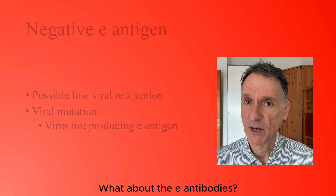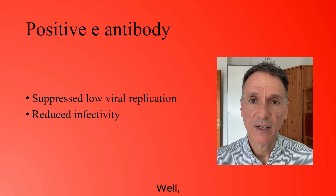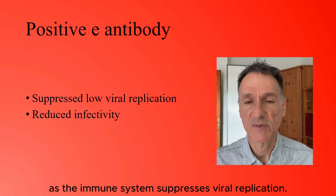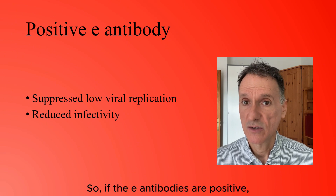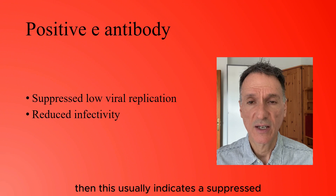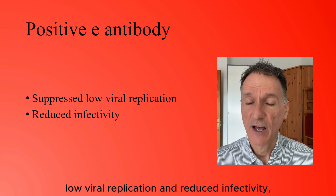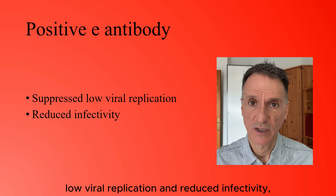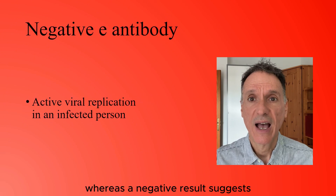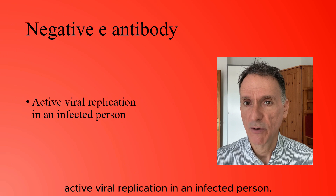What about the E antibodies? E antibodies are produced as the immune system suppresses viral replication. If the E antibodies are positive, this usually indicates suppressed, low viral replication and reduced infectivity, whereas a negative result suggests active viral replication in an infected person.